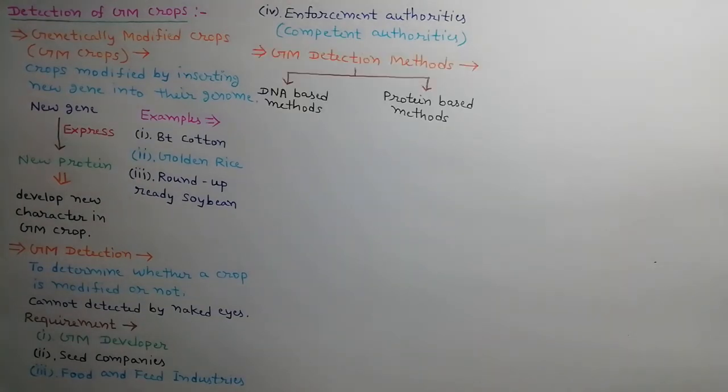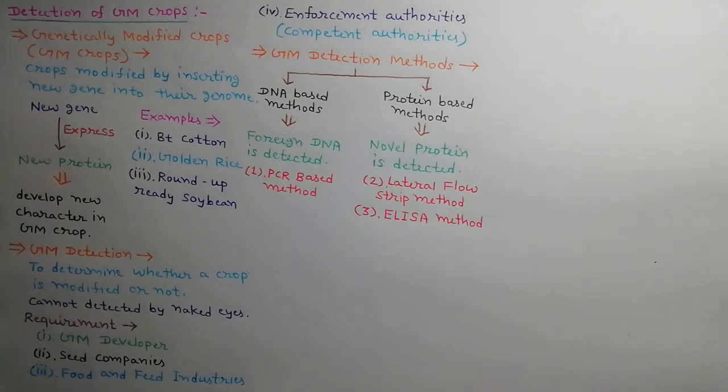There are two types of GM detection methods: DNA-based methods and protein-based methods. Foreign DNA is detected in DNA-based methods, one method is PCR-based method, while novel protein is detected in protein-based methods. Two methods are lateral flow strip method and ELISA method.